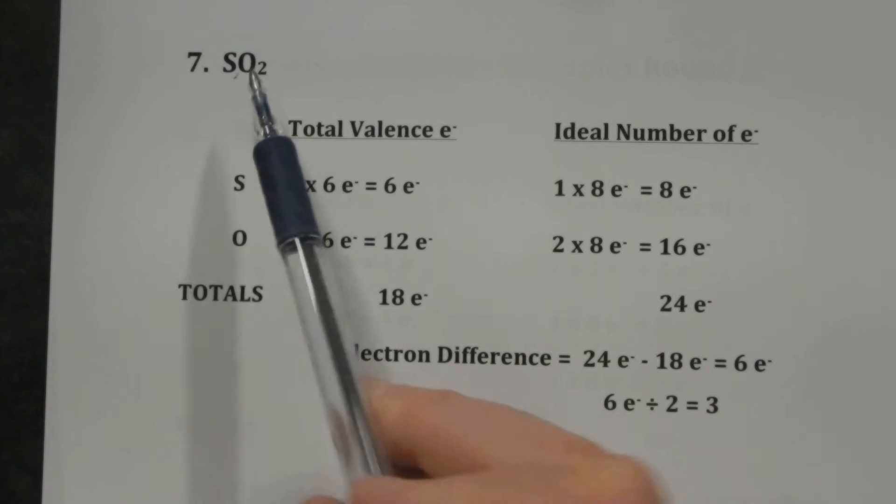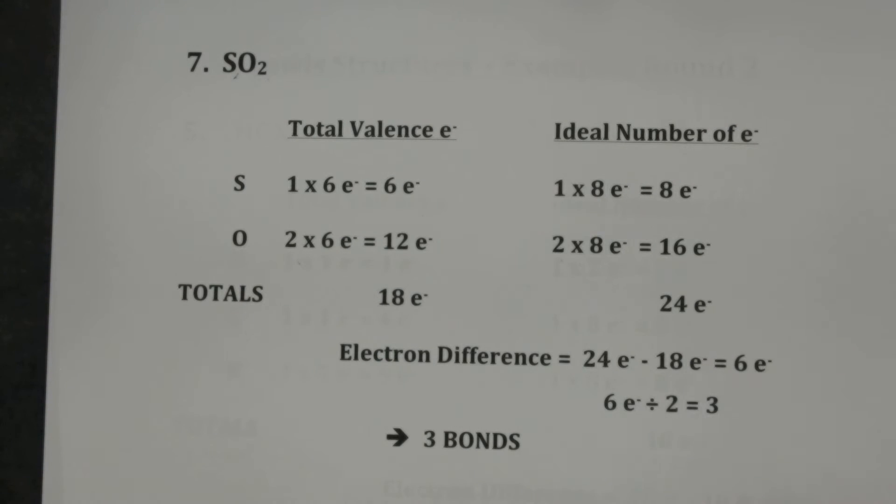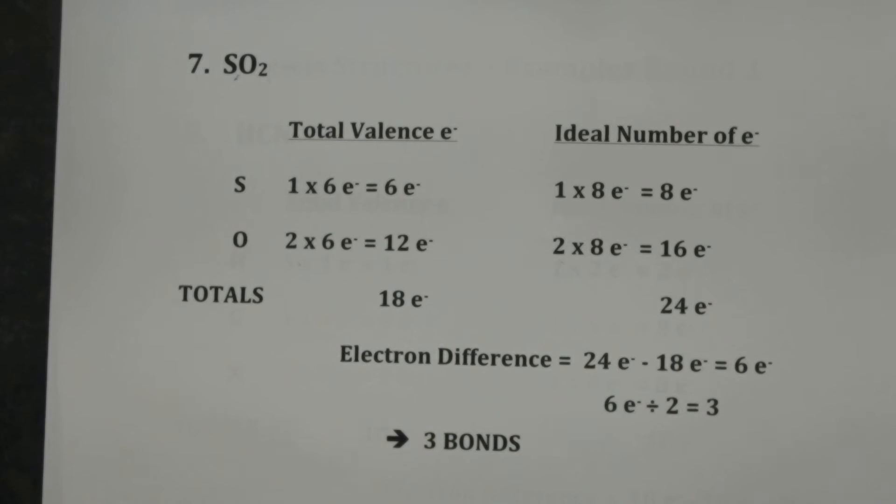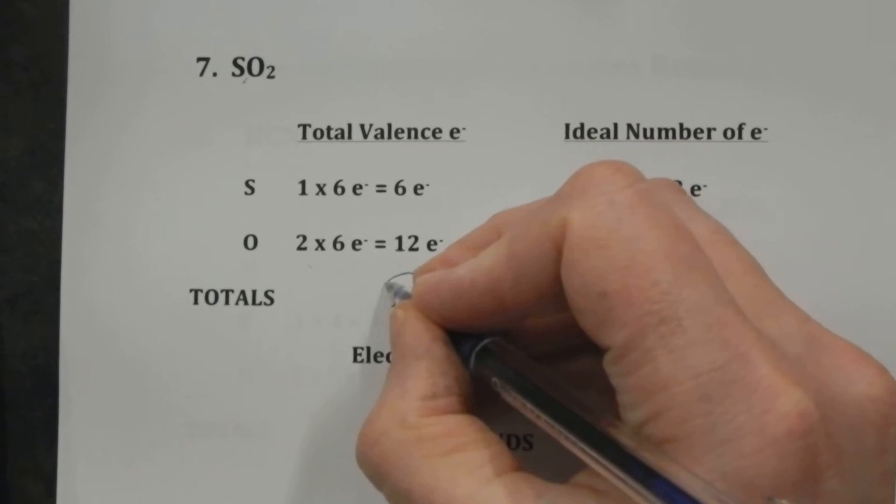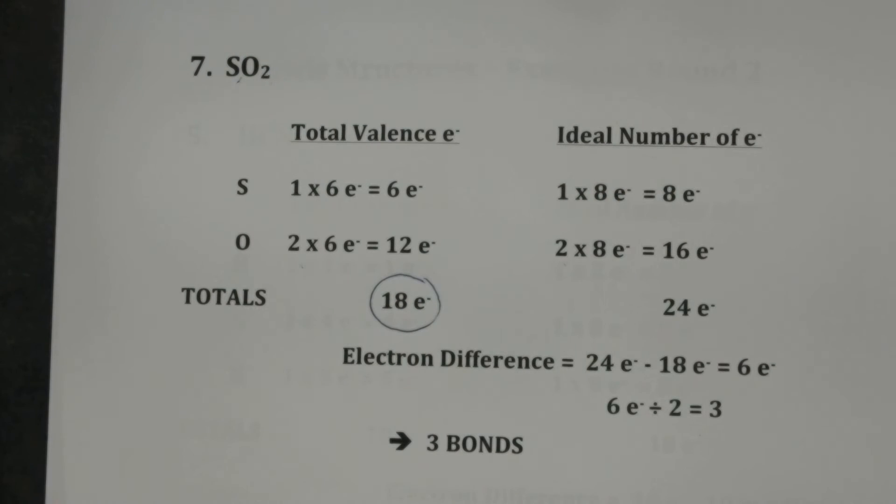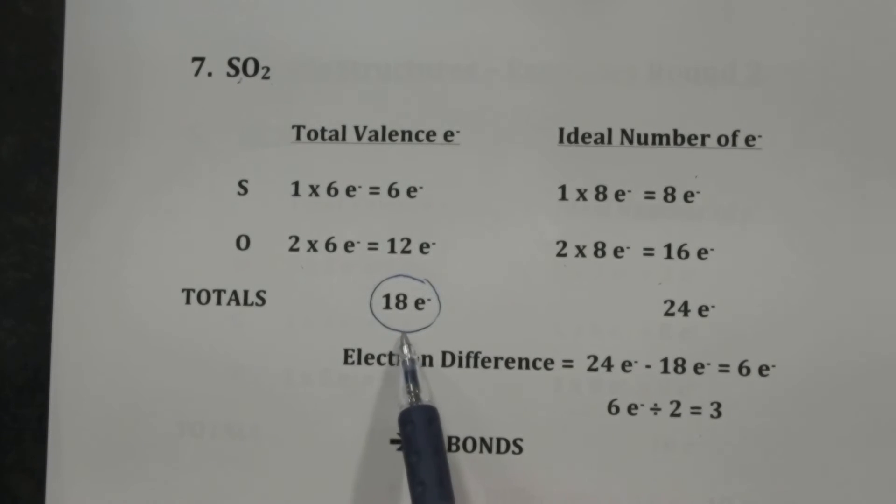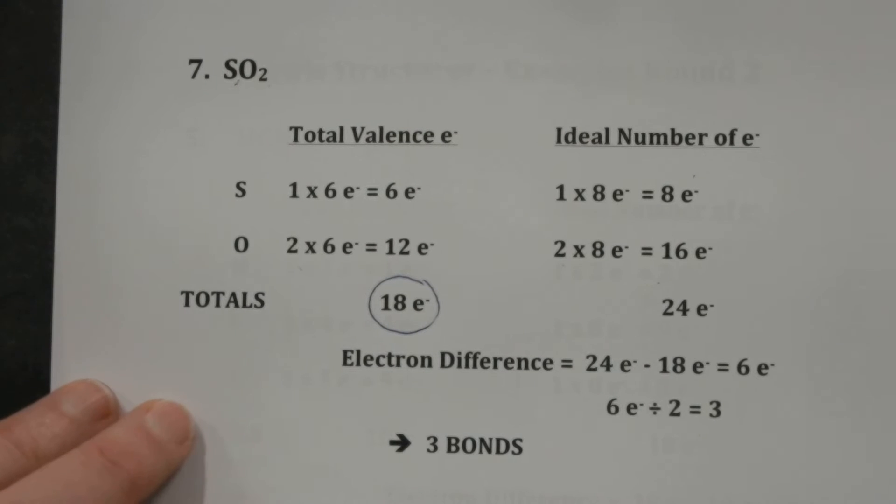We see a subscript of one and two, so we go one, two, one, two. Sulfur and oxygen are both group six, so it's all about sixes here and it totals 18 valence electrons. In a perfect world it would have 24 electrons, so we have to smear these 18 out electrons to give the effect that we had 24.